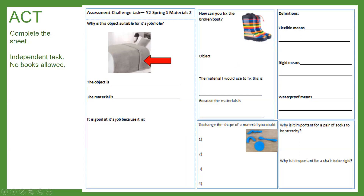The second box shows some items, and it says: how can you fix the broken boot? First you need to identify what this object is — it has nice stripy patterns on it. Then think about what material you might use to fix it, and finally what is special about that material — why does it make it good at its job?